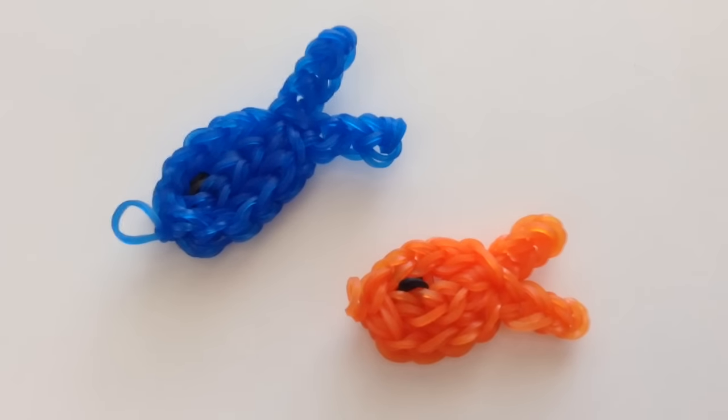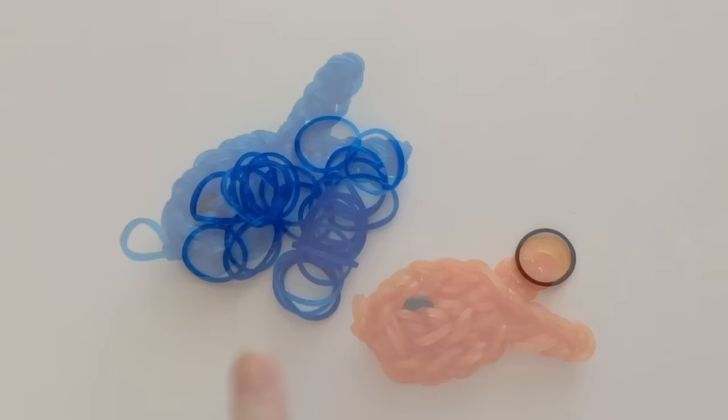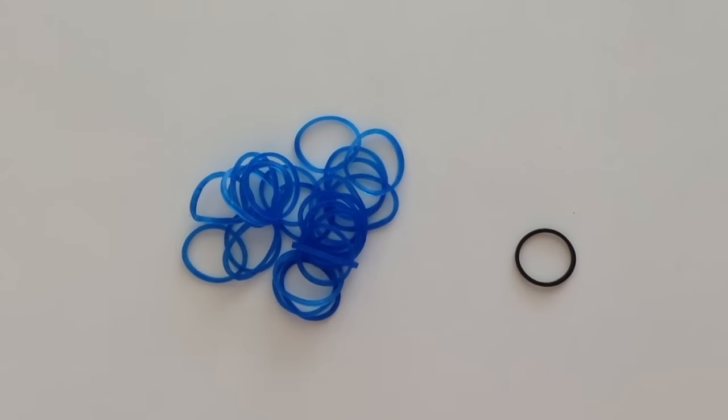Hey guys, so today I'll be showing you how to make these really easy fish charms on the rainbow loom. You'll need to choose a color for the body of your fish. I chose blue. And also you'll want one black rubber band for the eye of your fish.